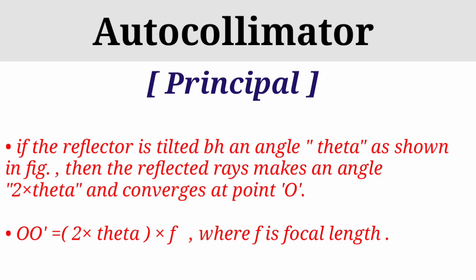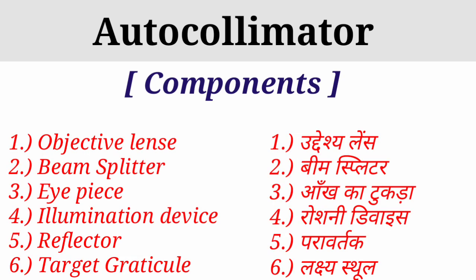आइए अब इसकी working जान लेते हैं, पर उससे पहले इसके components के बारे में discuss कर लेते हैं। First is objective lens, second beam splitter, third eye piece, fourth illumination device, fifth reflector, sixth target graticule. यही होते हैं autocollimator के components।